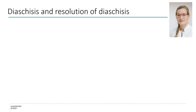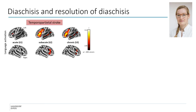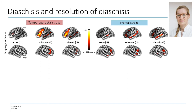Building upon our previous fMRI study, we measured language processing longitudinally by contrasting fMRI activation during listening to speech as compared to reversed speech. On the left-hand side, you can see how language activation changes from the acute to the subacute and chronic phase in patients with left temporal parietal stroke. On the right side, the same is shown for patients with frontal stroke.